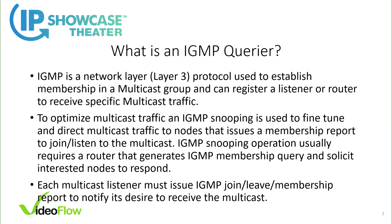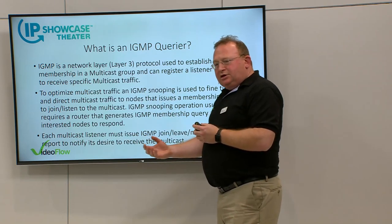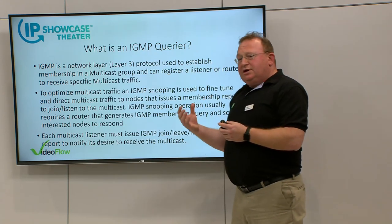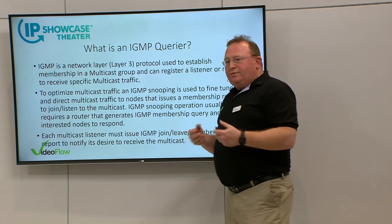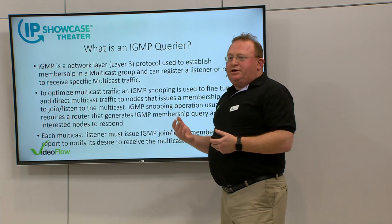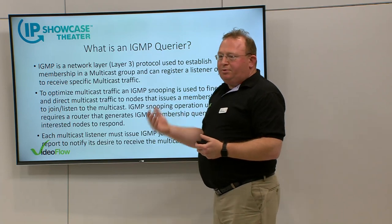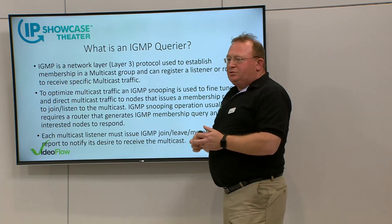Each multicast listener must issue IGMP join when it joins the stream, leave when it leaves, or in IGMP v3 these are called membership reports. It also needs to report occasionally that it's still consuming the data and still wants to listen. The query function basically asks the network: who is still listening? A device can die or be disconnected, and we don't want to stream data to it. The IGMP query asks whether there is a listener — there can be zero, one, or multiple — and it stores that information, giving us the ability to optimize the network.